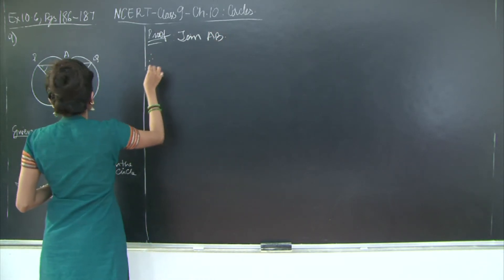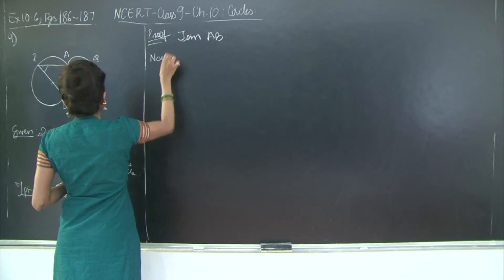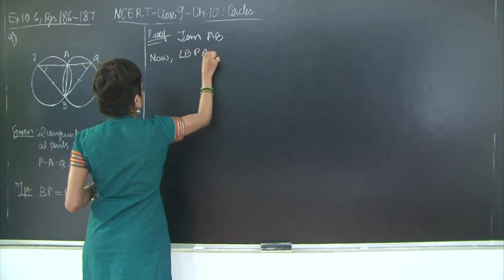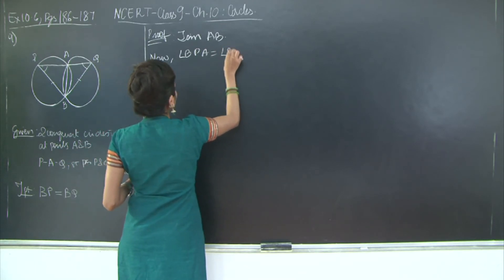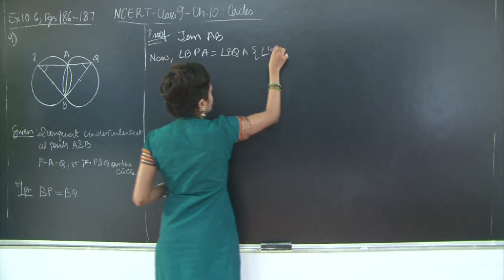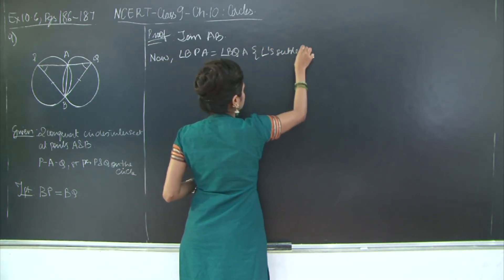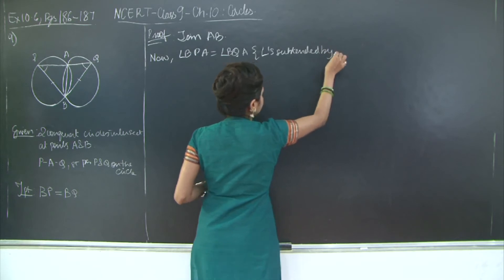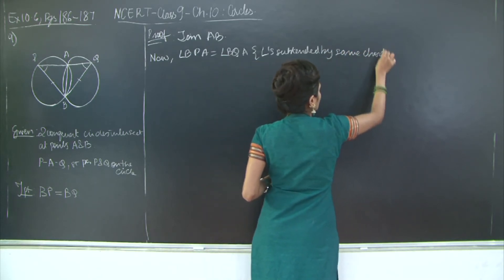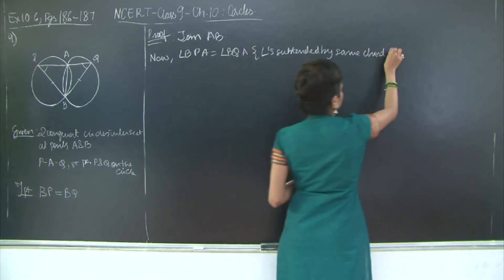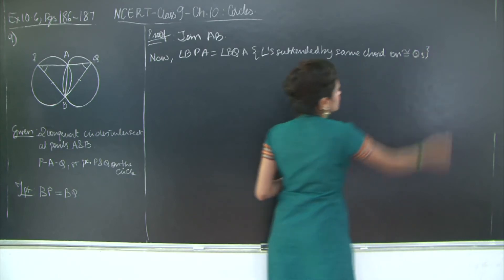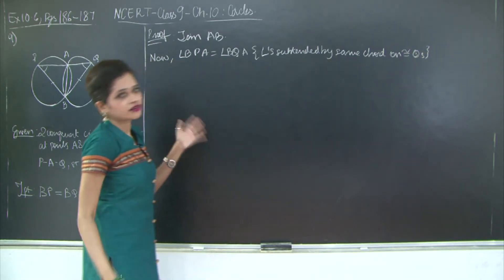Therefore now we have angle BPA is equal to angle BQA. Angles subtended by same chord, same chord on congruent circles. So congruent circles here is very important, same chord and congruent circles.